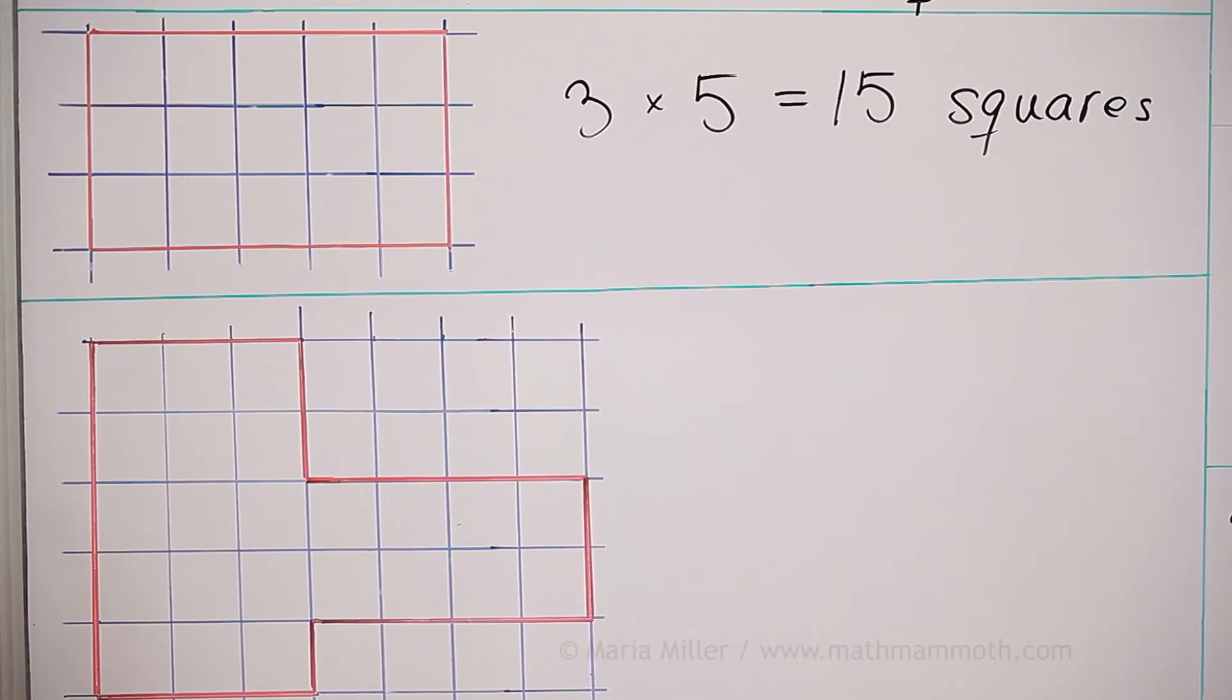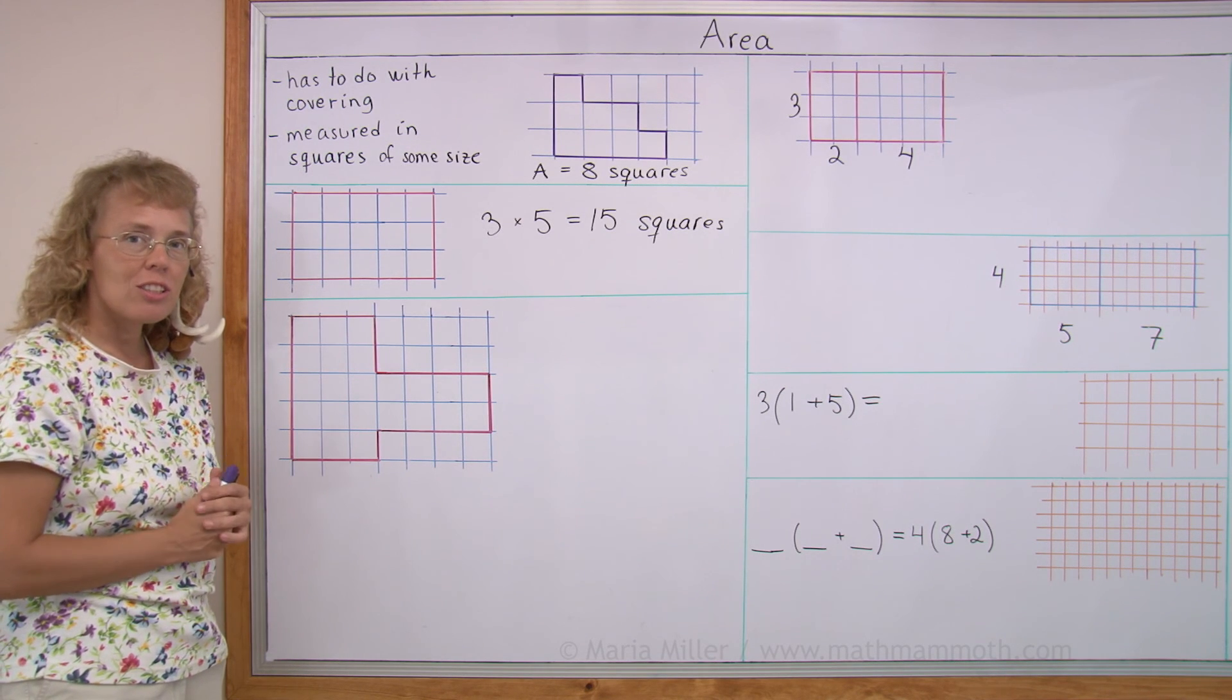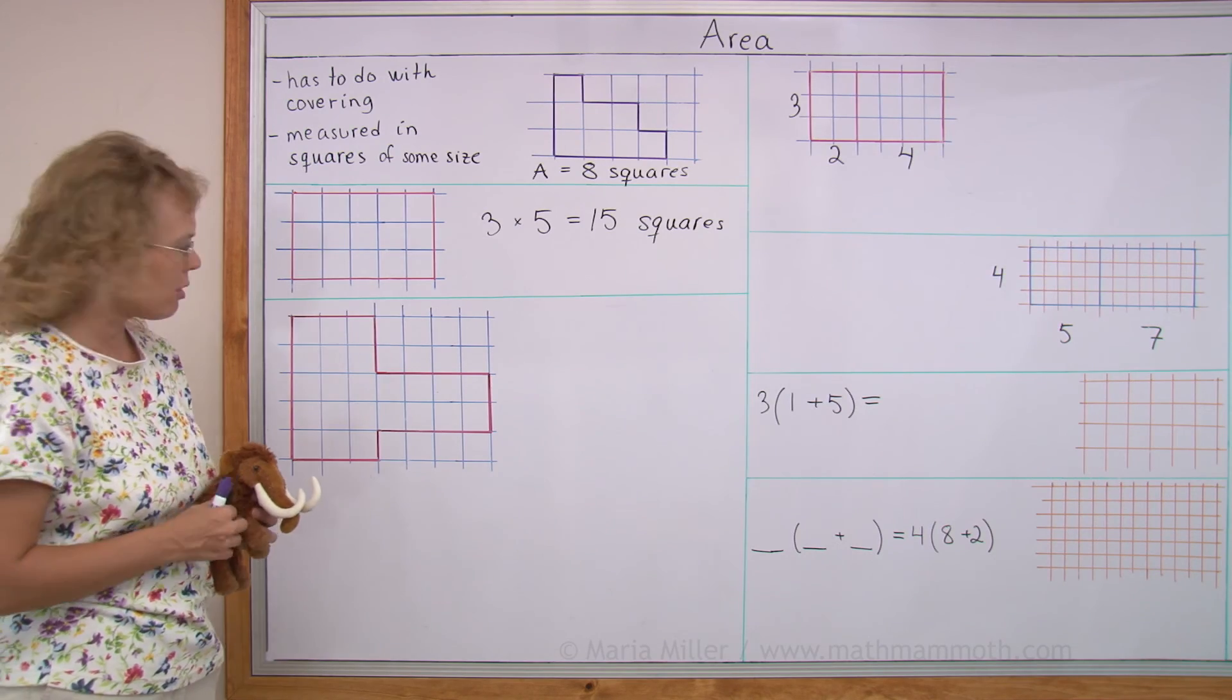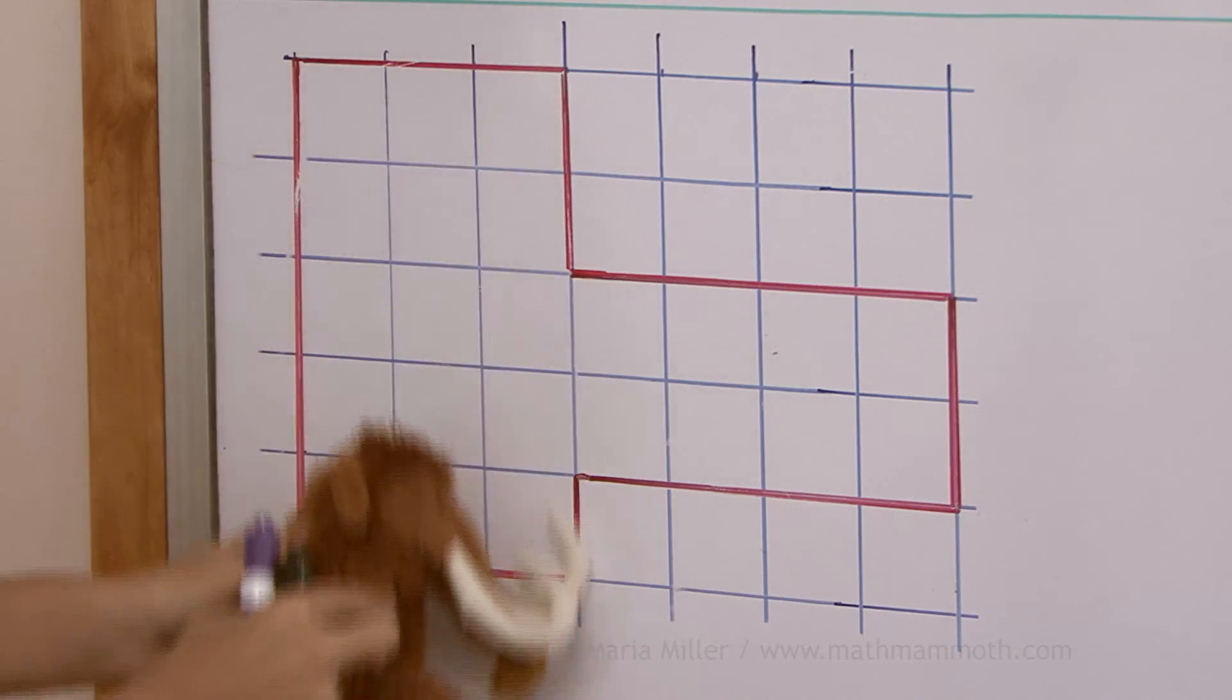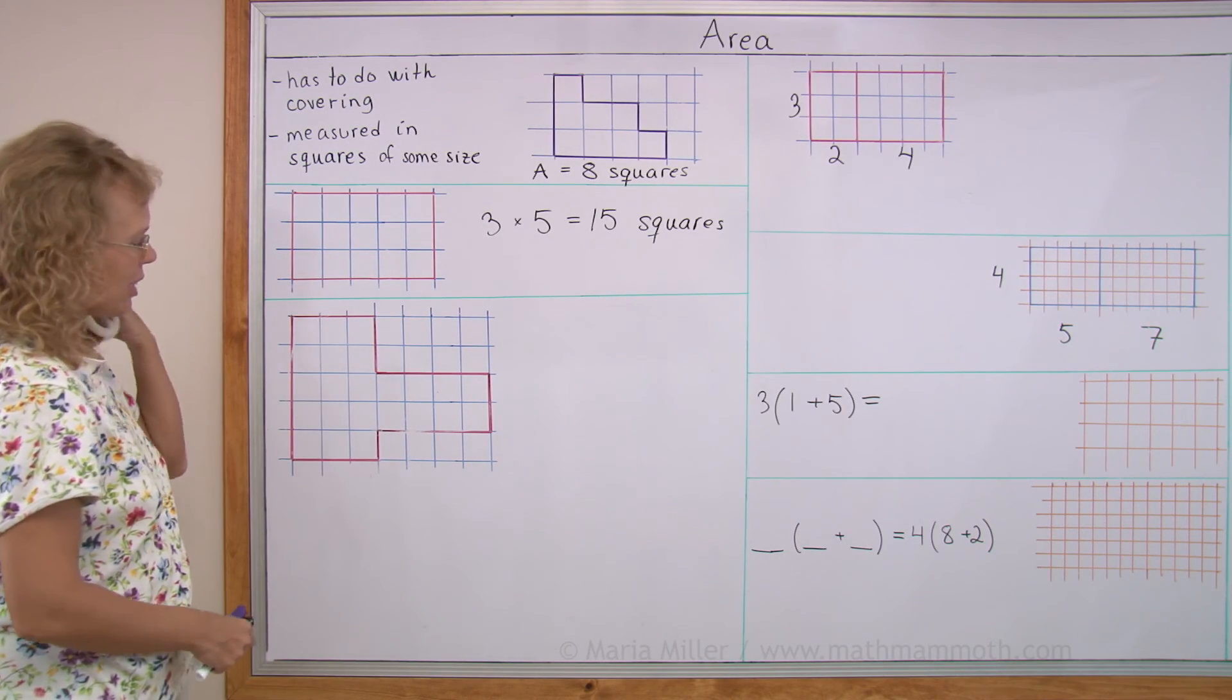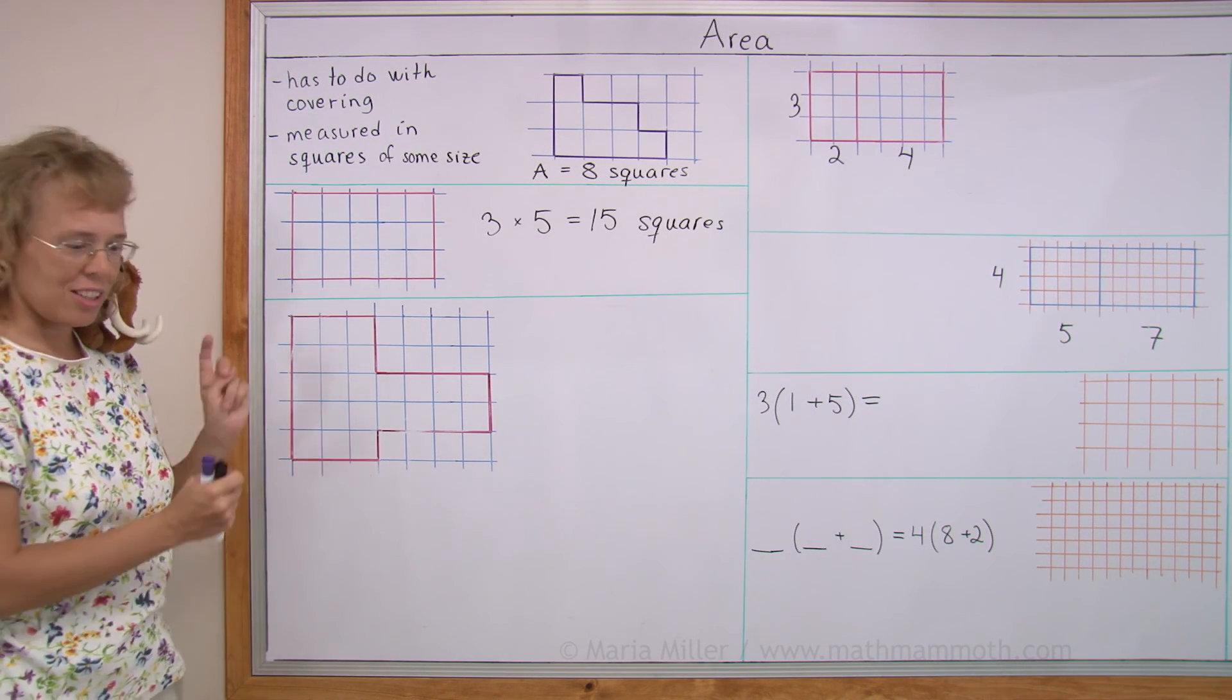Now this one here is a more complicated shape. But we can divide it into 2 rectangles. Right? And then we can use multiplication to find the area of each rectangle. Matthew, come. Come on here, Matthew. Show us. Can you see how we could divide this into 2 rectangles? You probably can. Matthew is showing you. Here's one rectangle. And here's the other. Of course, in this case, it would be easy to just count the squares.